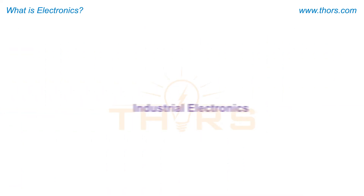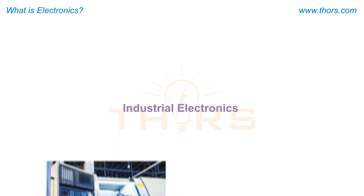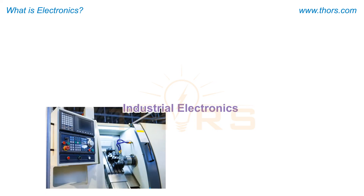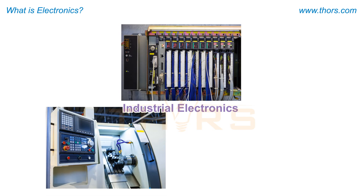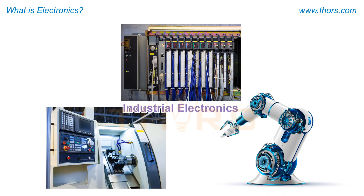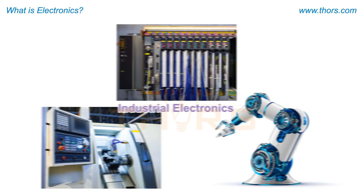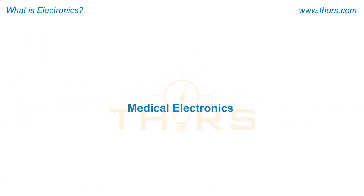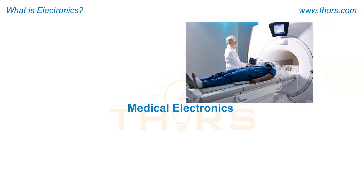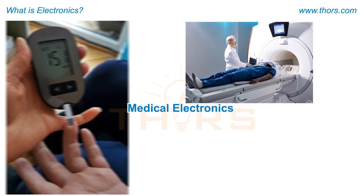Industrial electronics are electronic systems employed in computer numerical control or CNC machines, programmable logic controllers, and robotics. Medical electronics are found in medical devices, such as magnetic resonance imaging, or MRI, scanning machines, blood sugar monitors, and pulse oximeters.